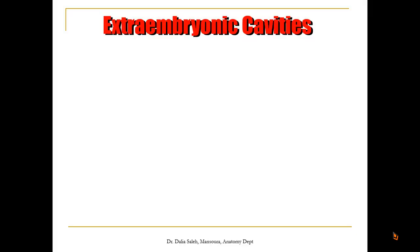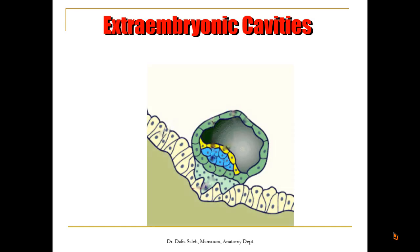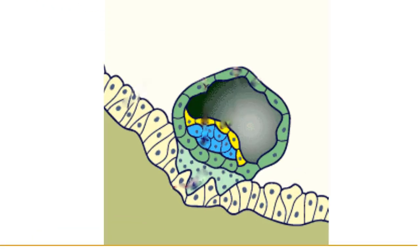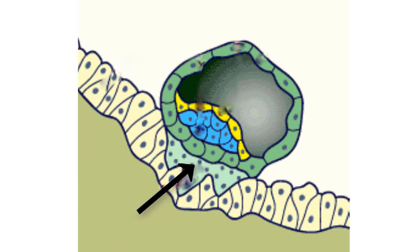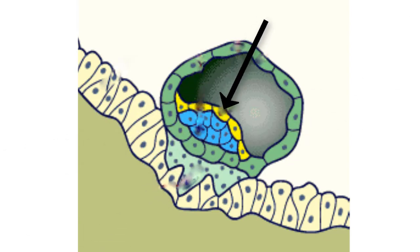First, let's see how the extra-embryonic cavities develop. If we look at this sample picture, this is the endometrium of the uterus. The outer trophoblastic layer is formed of two layers: cytotrophoblast and syncytiotrophoblast. The inner cell mass is formed of two layers: epiblast and hypoblast. Near the hypoblast, there is a cavity that develops, important for transmission of nutrition to the inner cell mass. It is the blastocoel.